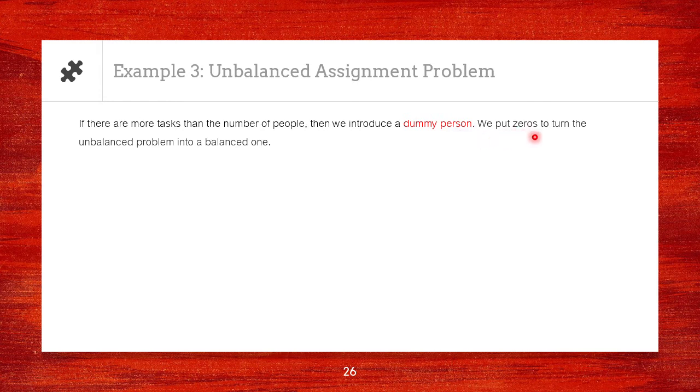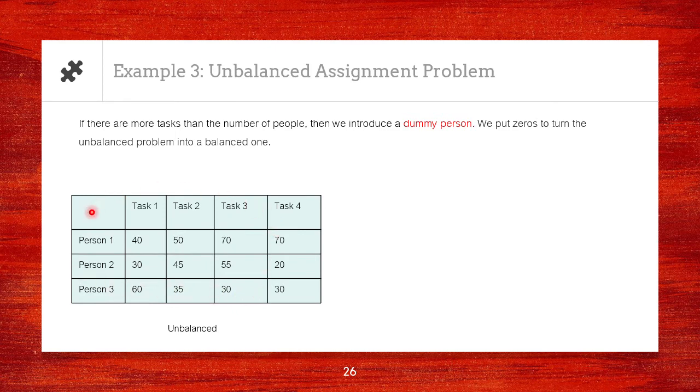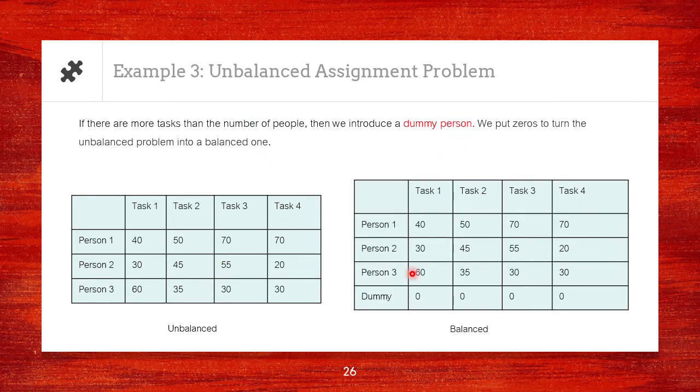For example, if this is our opportunity cost table, notice that there are more tasks than the number of people. So, to transform this into a balanced problem, we will introduce a dummy person, and we will put zeros in that additional row. Because of this, the unbalanced problem has turned into a balanced problem.